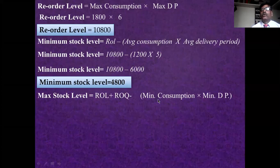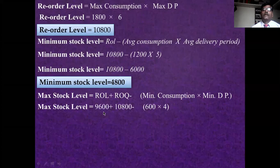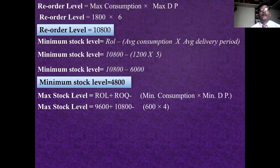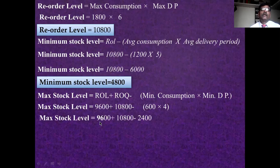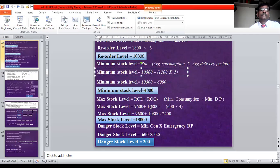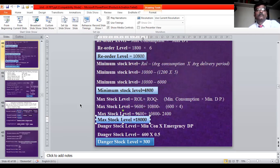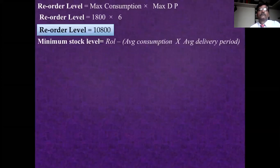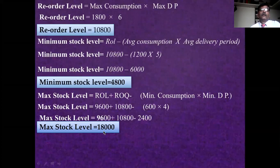Maximum stock level = ROL + ROQ − (minimum consumption × minimum delivery period) = 10,800 + 9,600 − (600 × 4) = 10,800 + 9,600 − 2,400 = 18,000 units. Note: the values were initially interchanged; fill them in the correct sequence to get the right answer of 18,000.